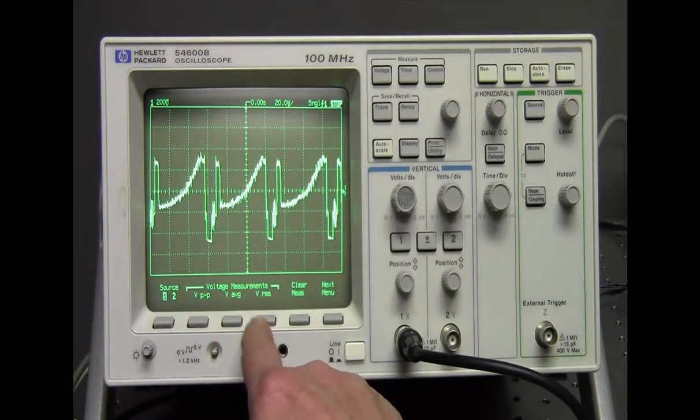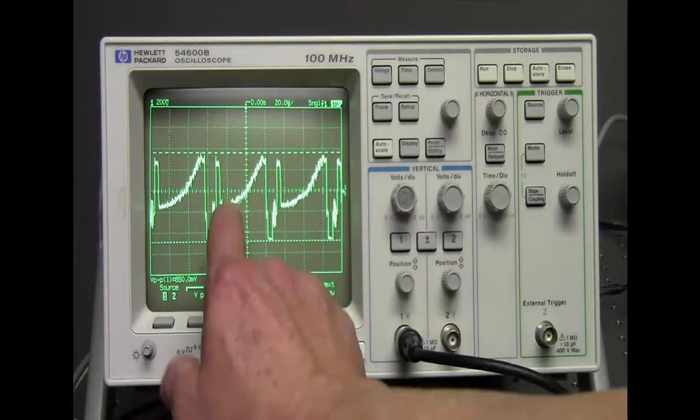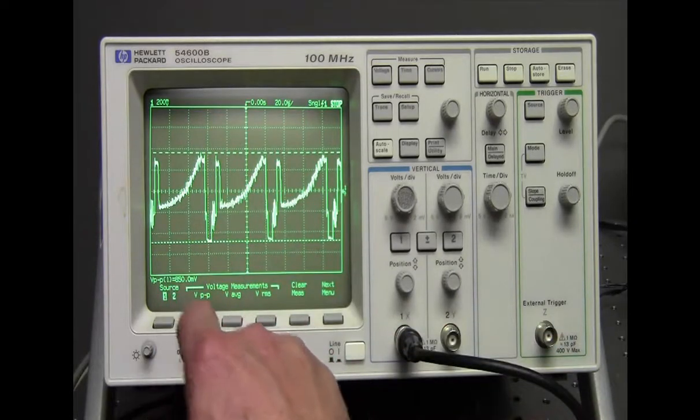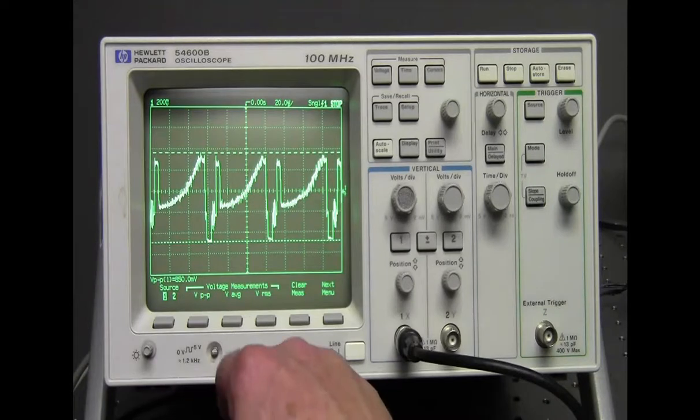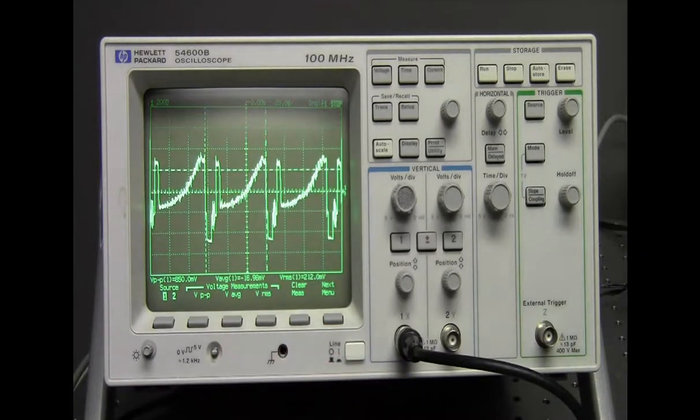This first one gives me the high and the low voltage reading. Here it says 850 millivolts. I can get voltage average and voltage RMS, and you would record the proper one that you need.